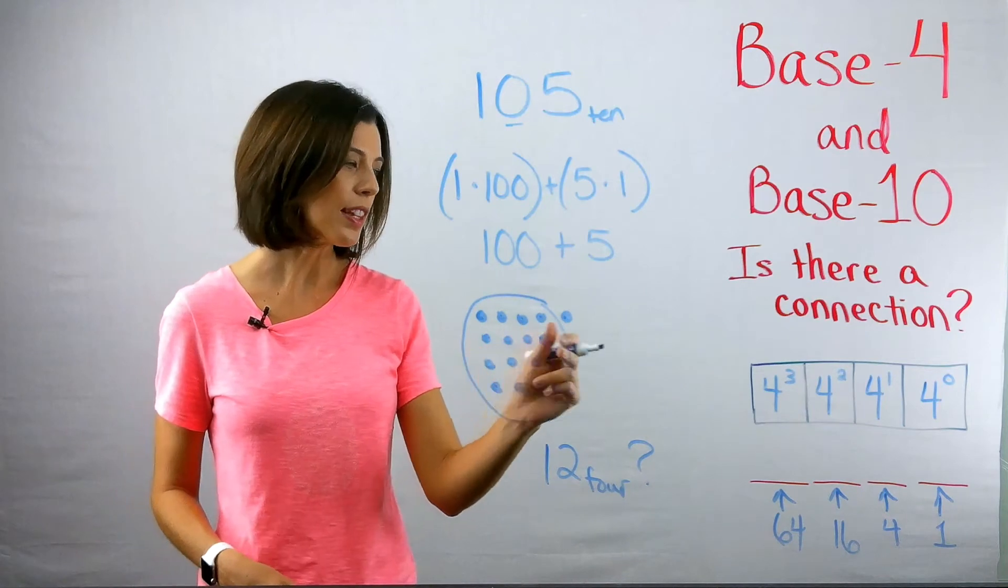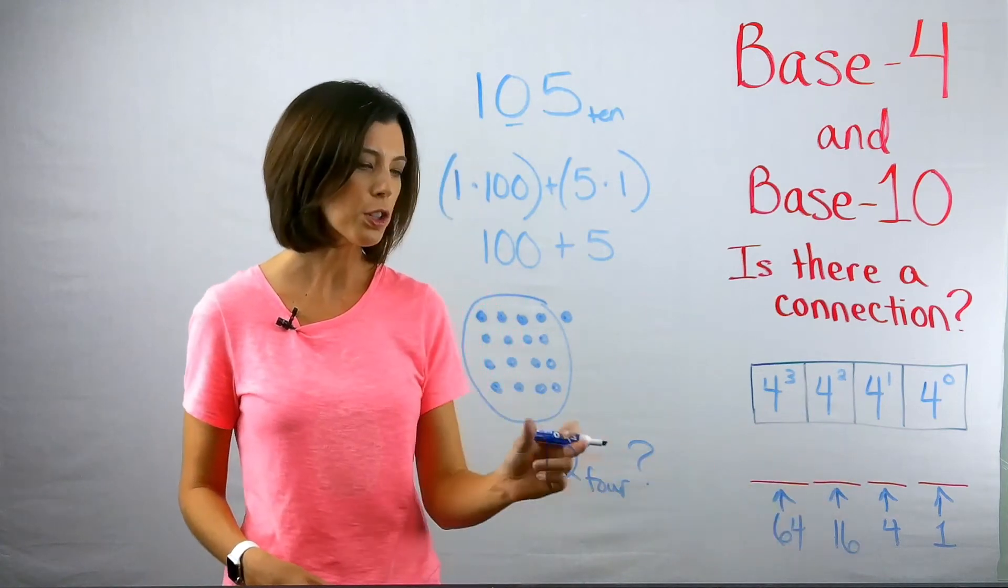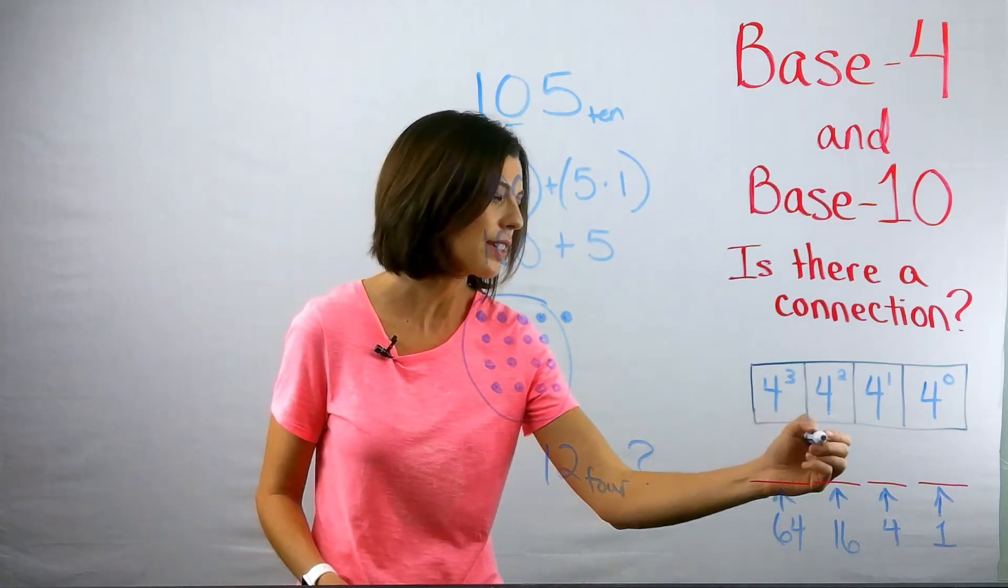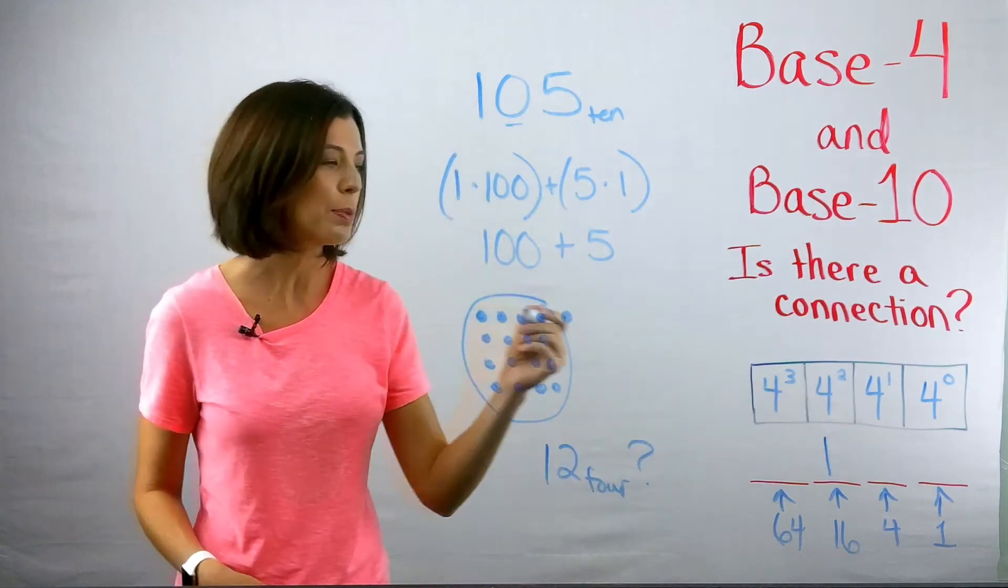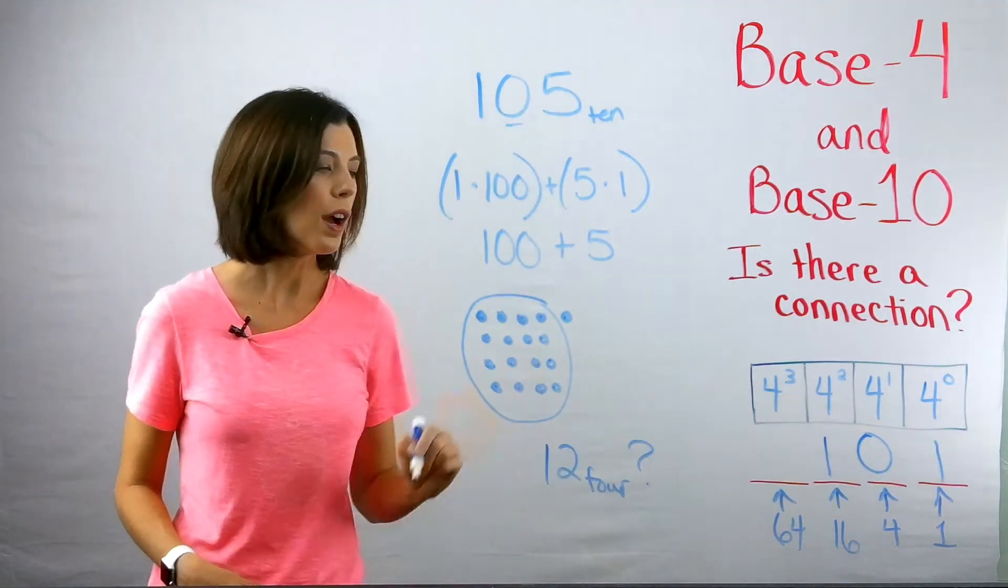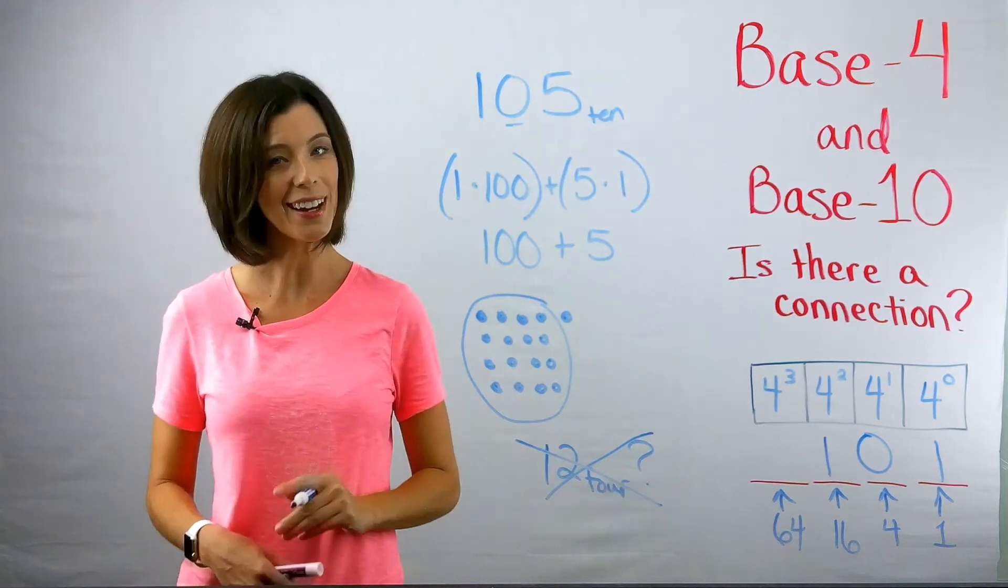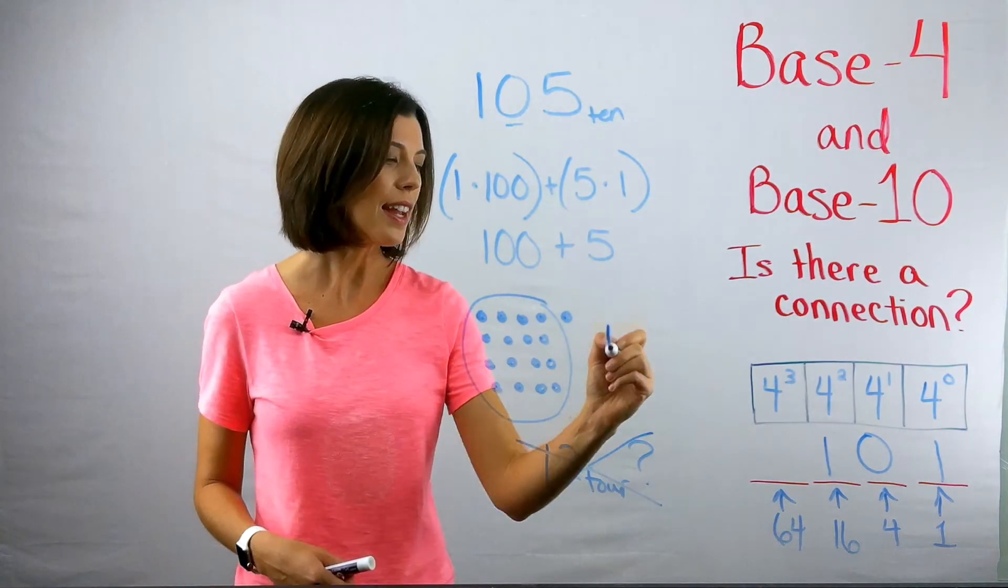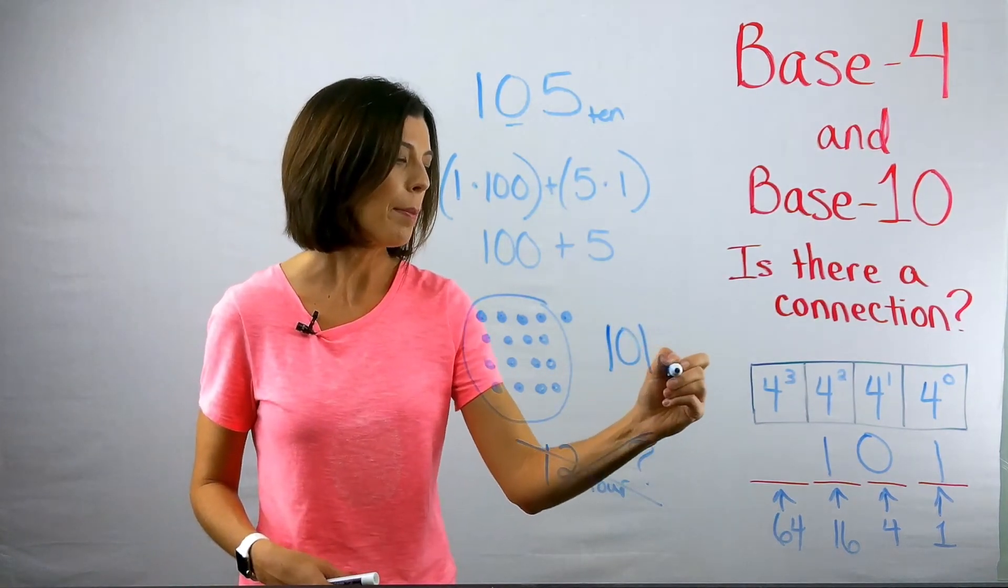So if I think about this, and again, I'm looking at my base four chart here, I see that I have one group of 16, I have zero groups of four, and I have one unit. So I know that that's not actually one, two, base four, actually one, zero, one, base four.